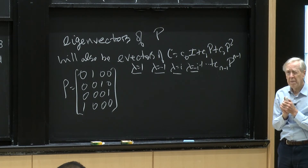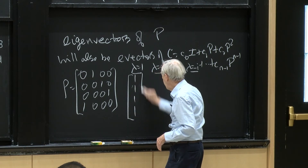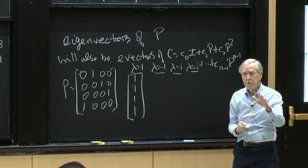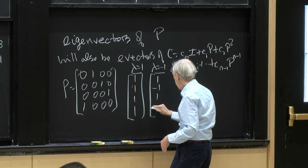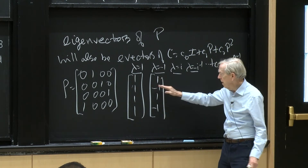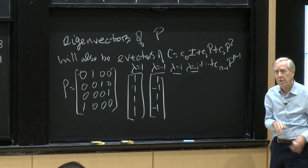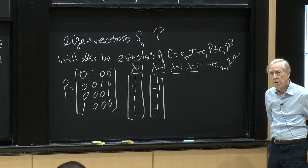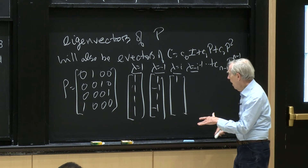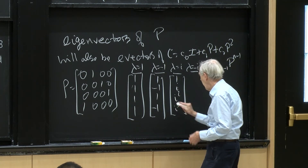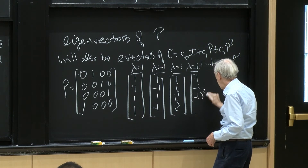What's the eigenvector for λ = 1? It's [1, 1, 1, 1]. For λ = −1, I want the shift to change every sign, so I alternate: [1, −1, 1, −1]. For the eigenvector with eigenvalue i, I want [1, i, i², i³]. And with eigenvalue −i, the vector [1, −i, (−i)², (−i)³].